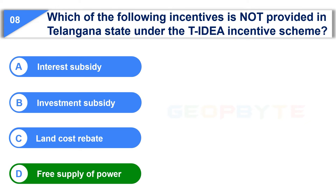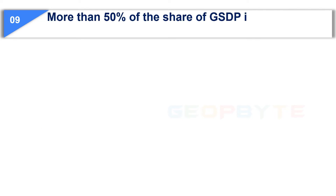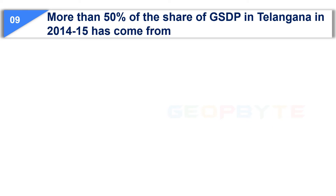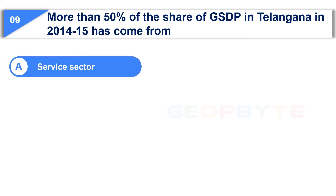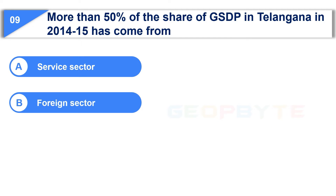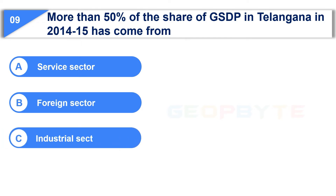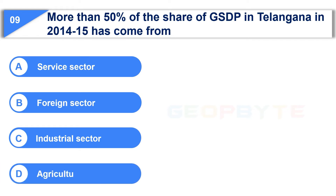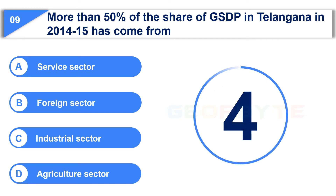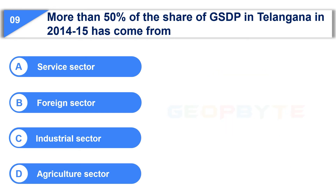The ninth question is: More than 50% of the share of GSDP in Telangana in 2014–15 has come from — Option A: Service Sector. Option B: Foreign Sector. Option C: Industrial Sector. Option D: Agriculture Sector. And the correct answer is Option A: Service Sector.